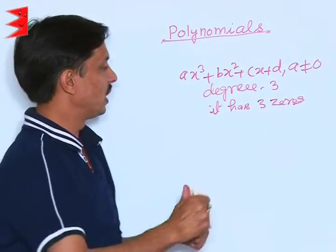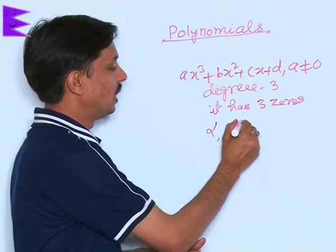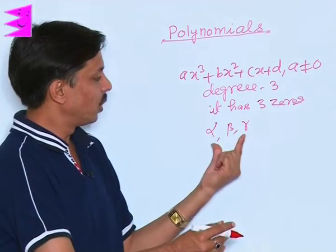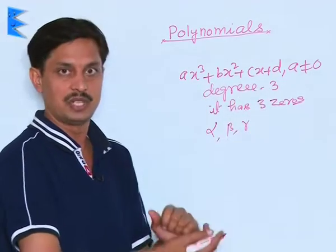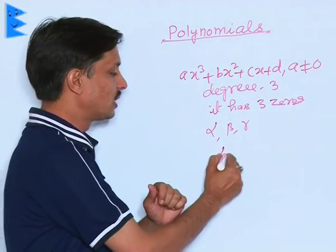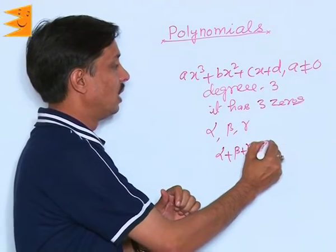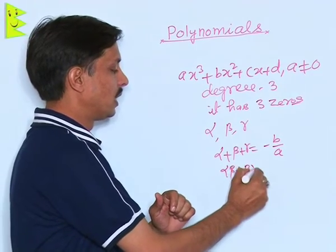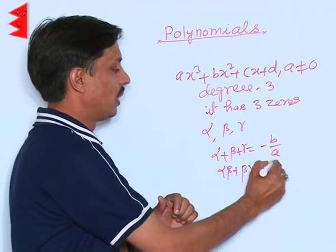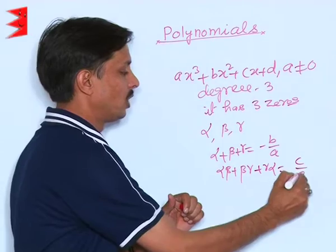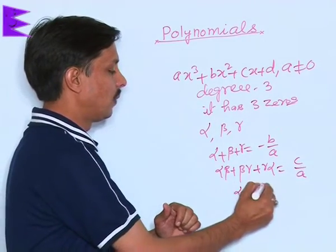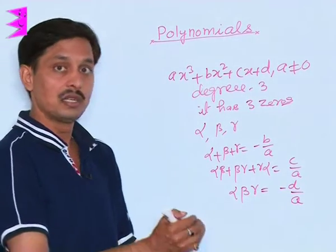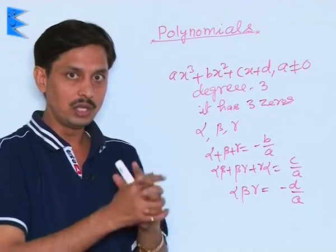If there are three zeros α, β, and γ, what is the relation between three zeros and these coefficients? The three relations are: α + β + γ = -B/A, then αβ + βγ + γα = C/A, then the third relation is αβγ = -D/A, as a cubic polynomial has three zeros.